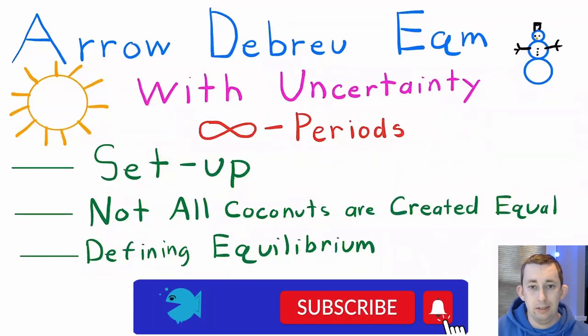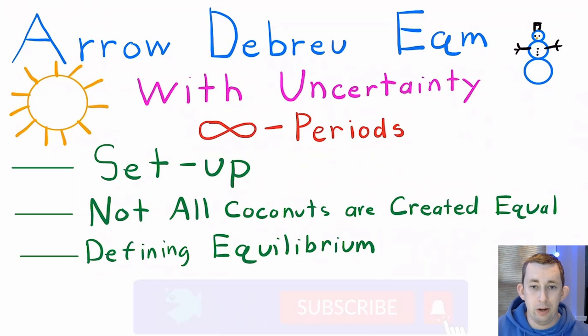Hi guys, welcome back to In Case of Econ Struggles. Today we're talking about Arrow-Debreu Equilibrium with uncertainty, but now we are going from one period to an infinite number of periods. This video, we're gonna go through the setup, but particularly we're going to talk about event histories versus states of the world. Let's go ahead and get into it.